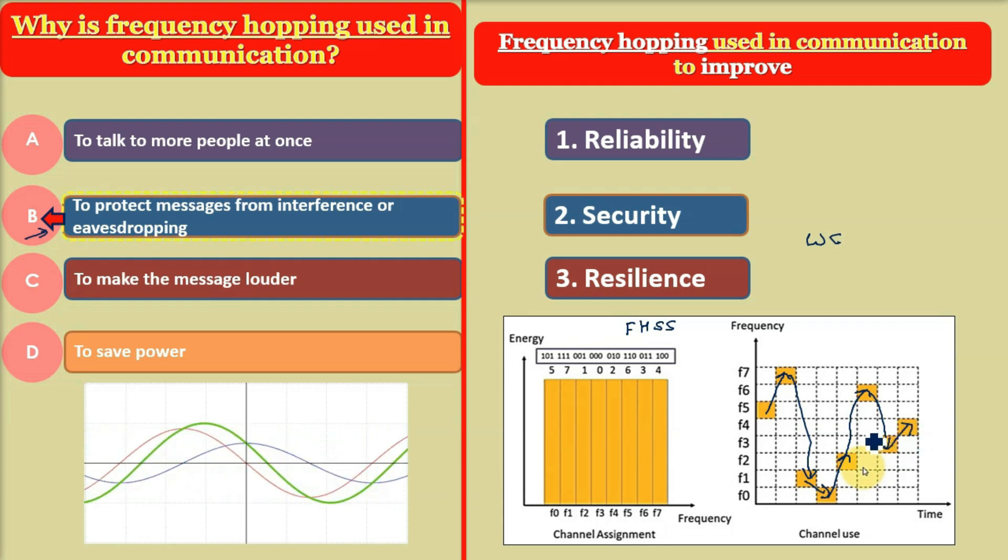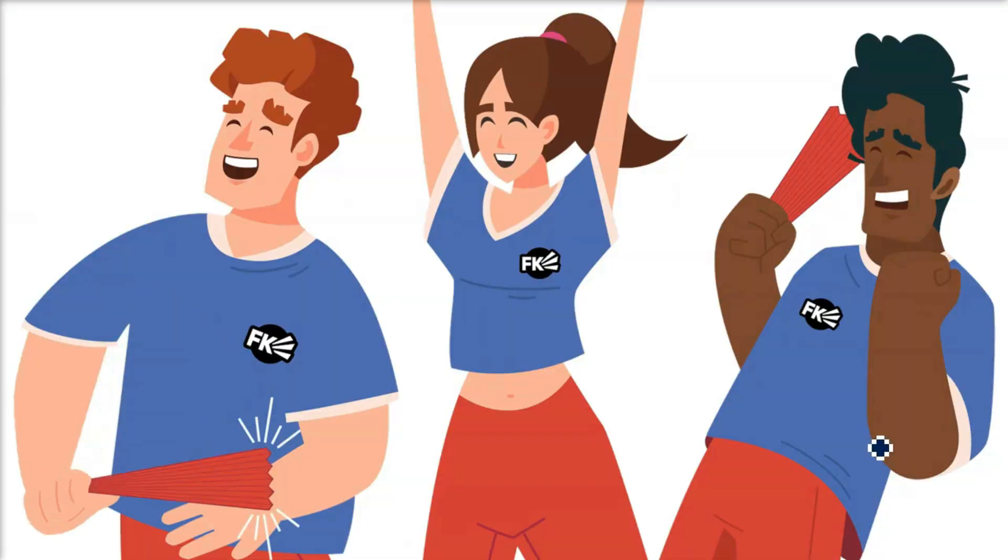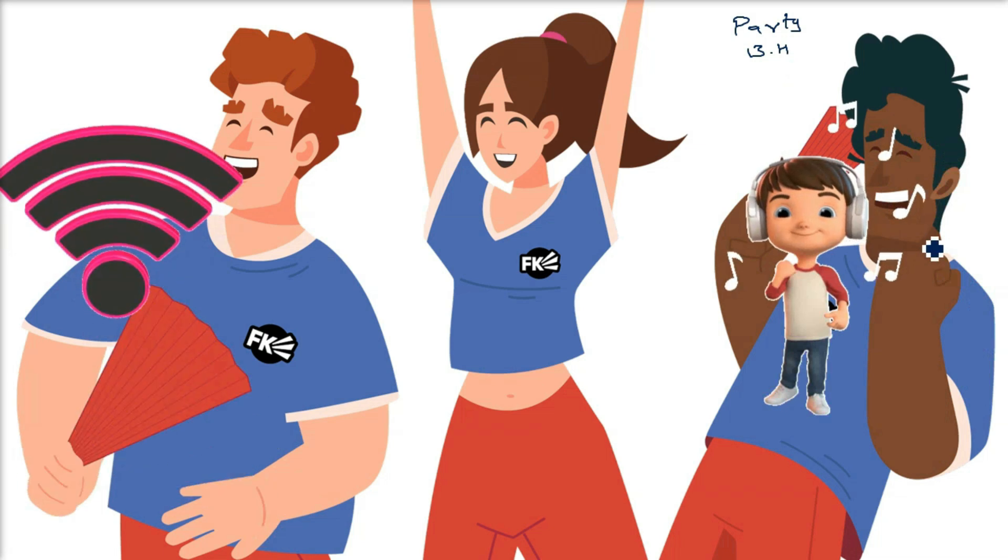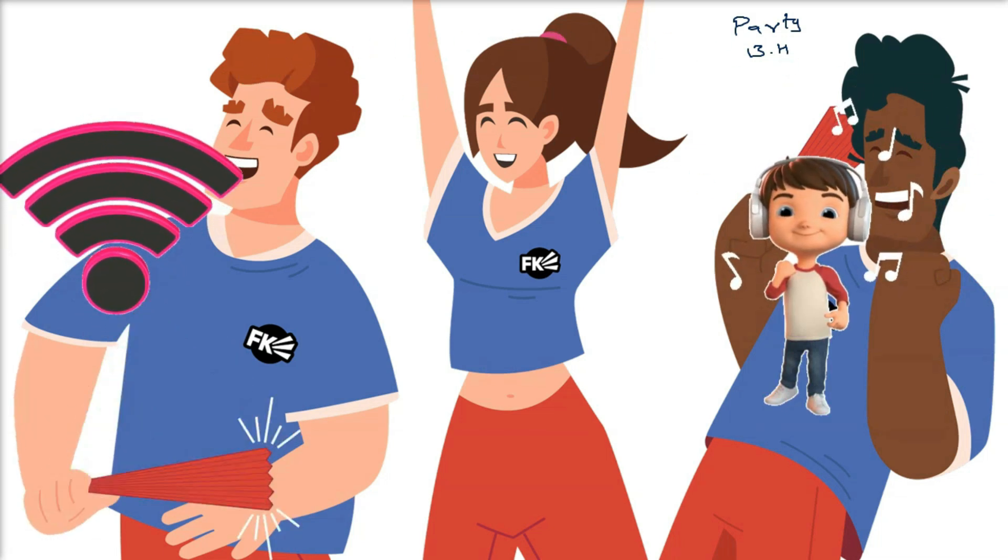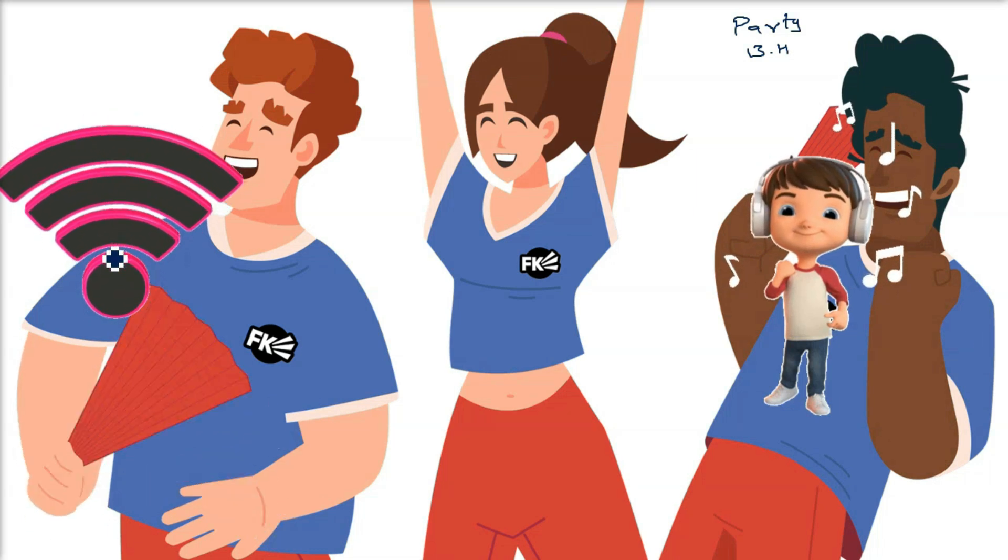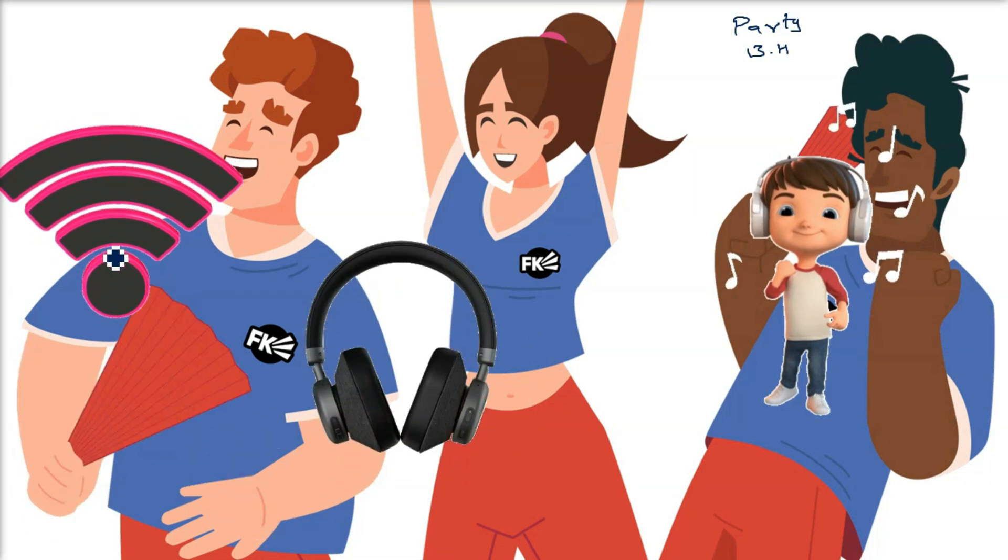Let's understand this with a real-life example. Imagine you are using Bluetooth headphones to listen to music in a crowded place with many people. Many people around you are using other wireless devices like Wi-Fi, other Bluetooth headphones, or even cordless phones.